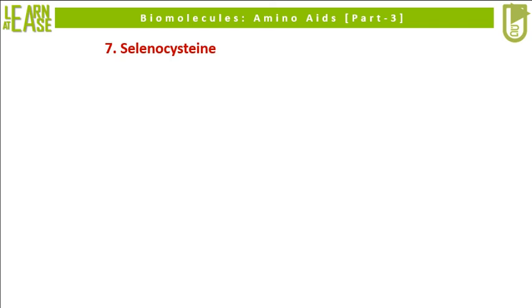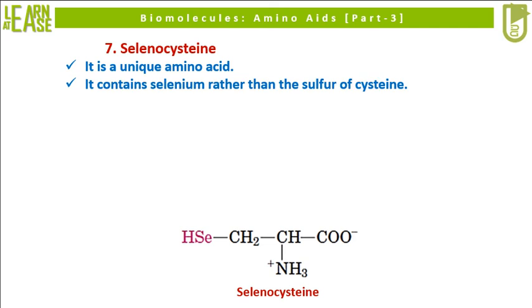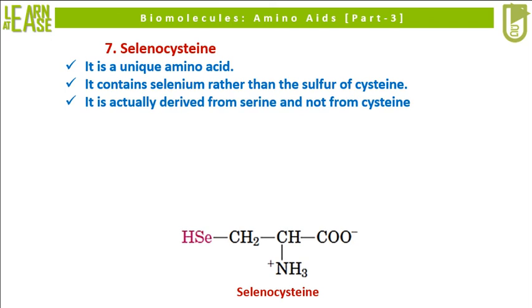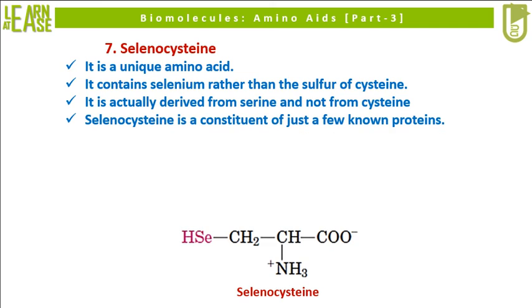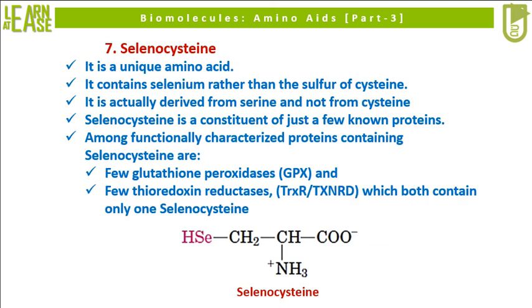The next uncommon amino acid is selenocysteine; its structure is shown here. Selenocysteine is a unique amino acid that contains selenium rather than the sulfur of cysteine. Selenocysteine is actually derived from serine and not from cysteine. It is a constituent of just a few known proteins, including certain glutathione peroxidases and thioredoxin reductases, which both contain only one selenocysteine.